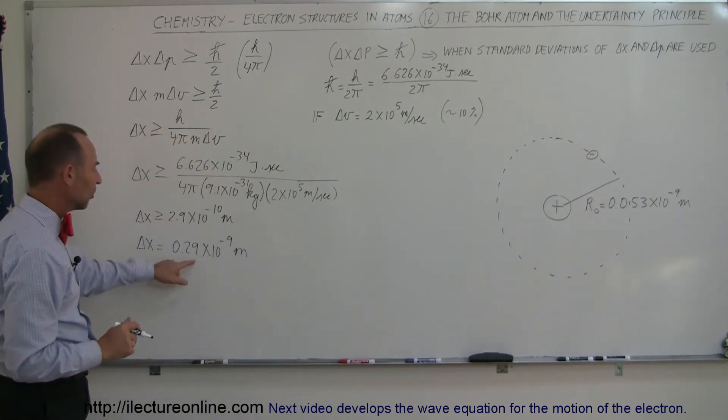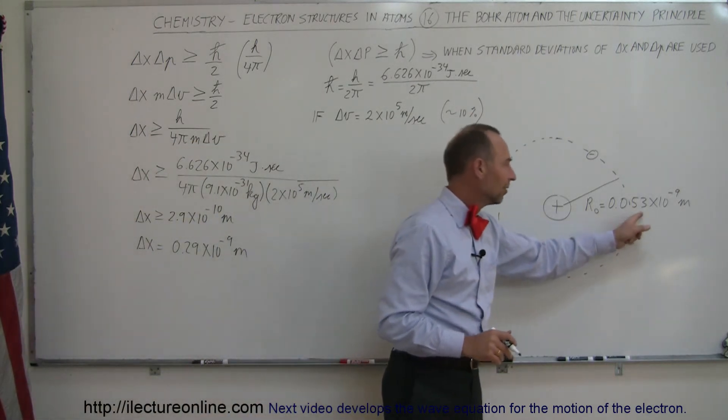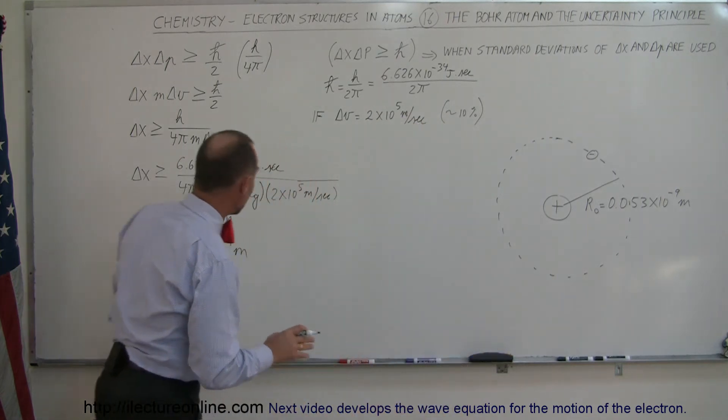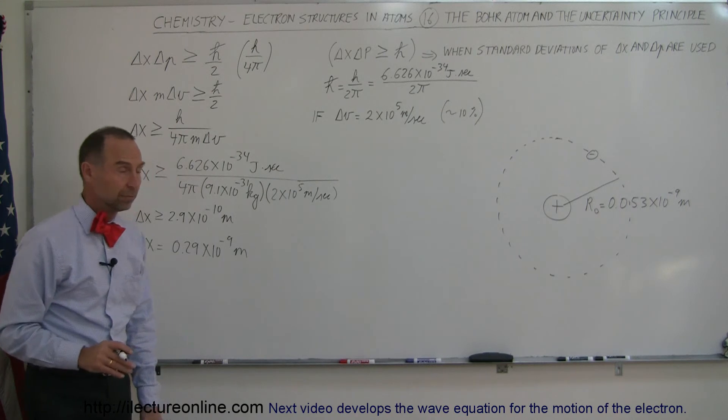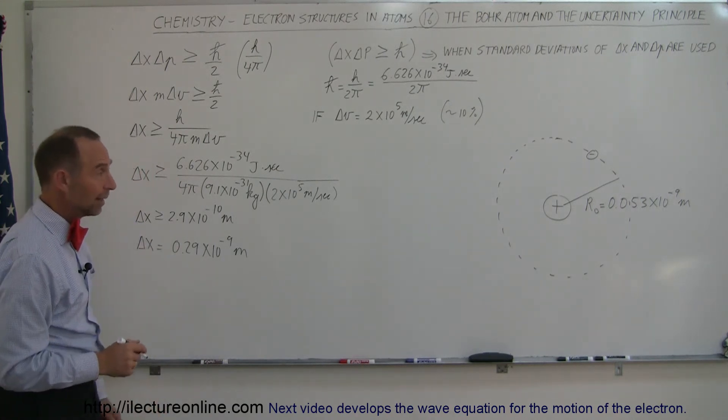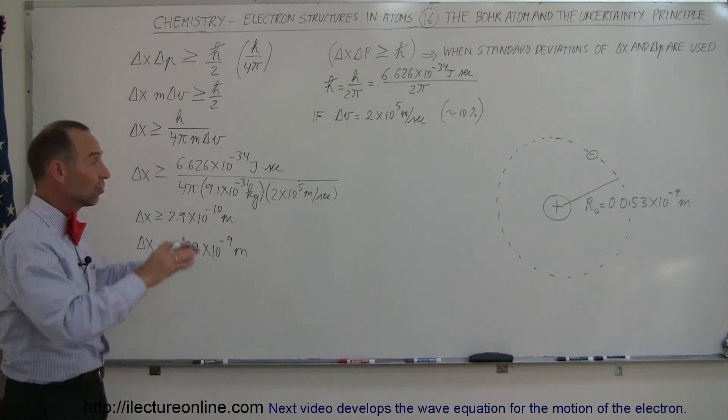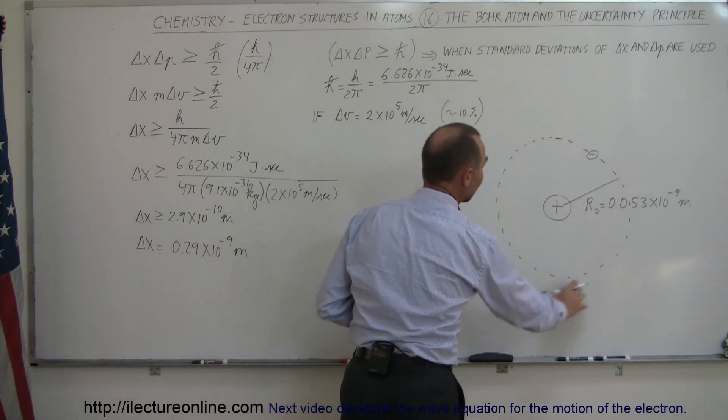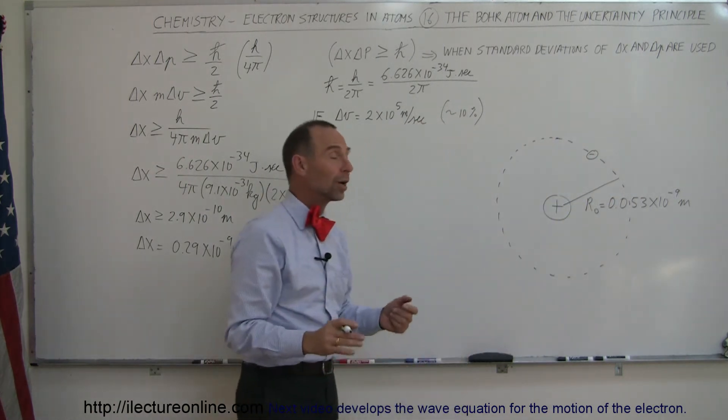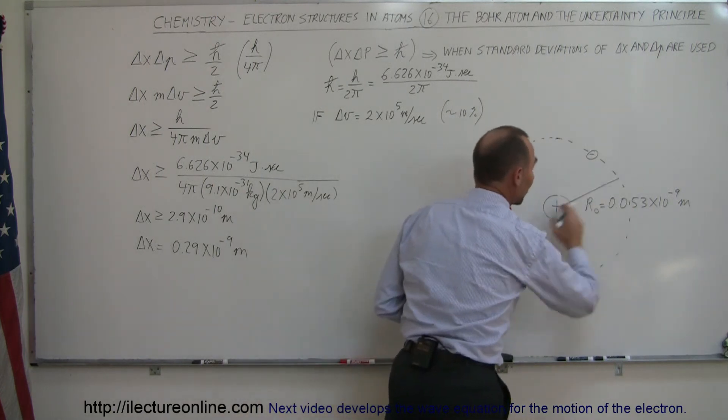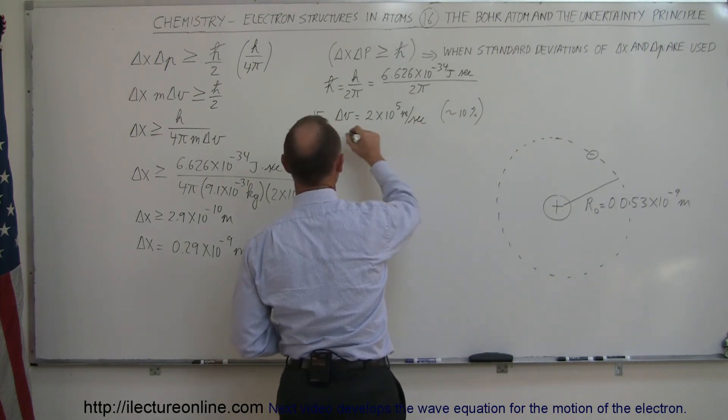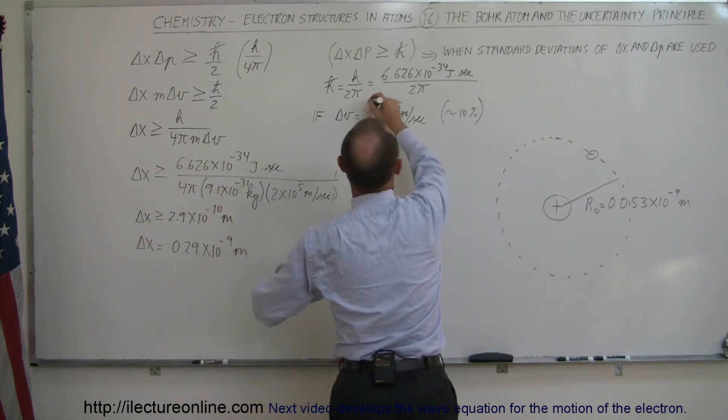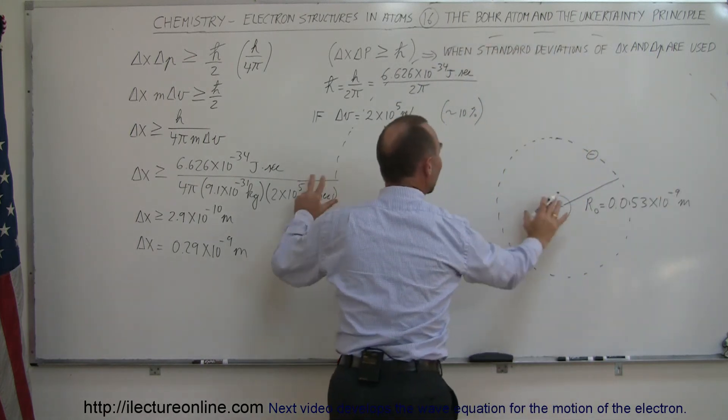Now notice that this is a much bigger number than this. It's not quite 10 times as big, but it's at least about 5 times as big. That means the uncertainty in knowing the position of the electron in an atom, in a hydrogen atom, is about 5 times the radius, so a sphere made up of 5 times the radius of the actual atom. So if this is what we think, from a traditional point of view, where the electron has to be, right around in an orbit about this far away from the nucleus, what we can say is that at any point in time.